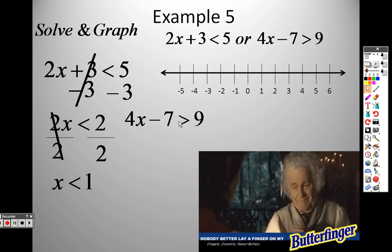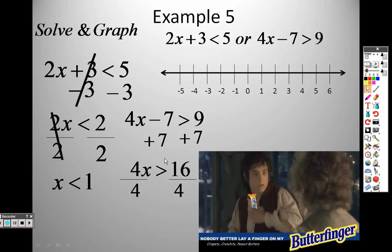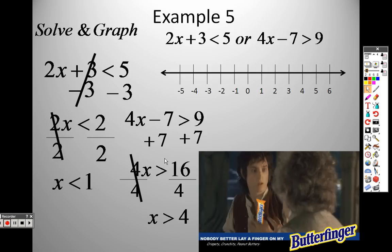On the other side, I have 4X minus 7 is greater than 9. So since it's minus 7, I would add 7 to both sides. I would get 4X, because those cross out, is greater than 16. I would divide both sides by 4, and when I divide them both by 4, I get X is greater than 4.